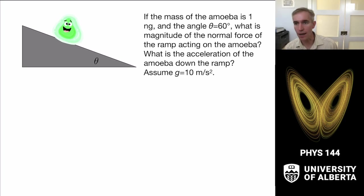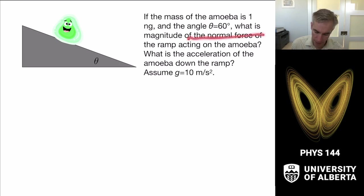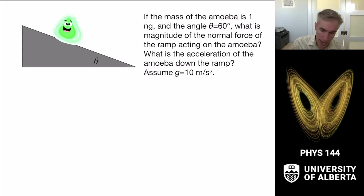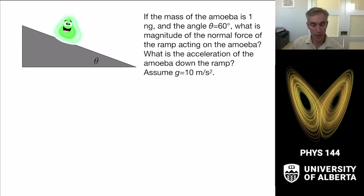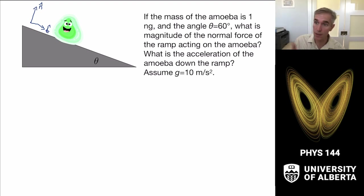The next problem involves an amoeba sitting on an inclined plane with a mass of one nanogram and an angle of 60 degrees. I'd like to know the magnitude of the normal force of the ramp acting on the amoeba and the acceleration of the amoeba down the ramp. I'll start by constructing a coordinate system that is parallel and perpendicular to the amoeba's plane of motion — an n-t coordinate system with a tangent component and a normal component.